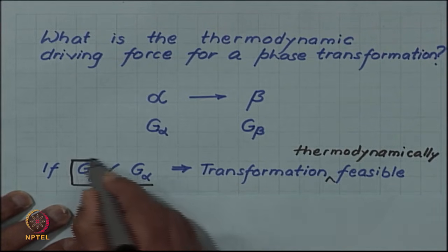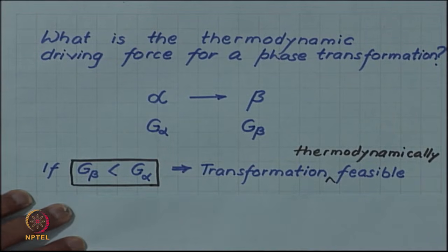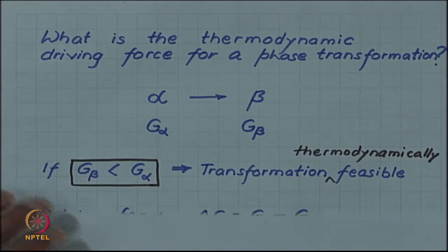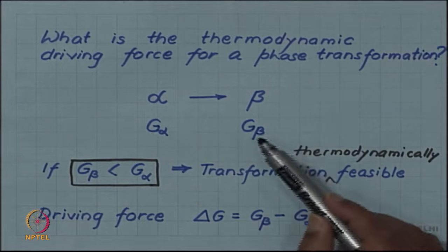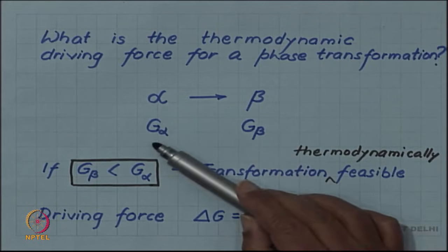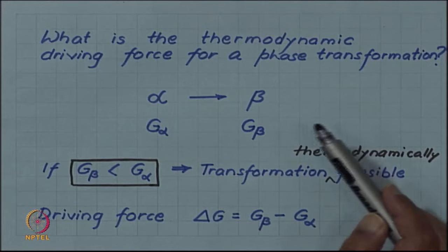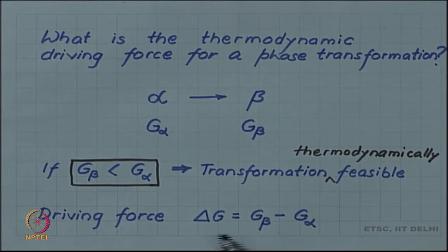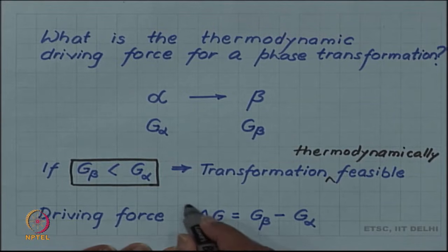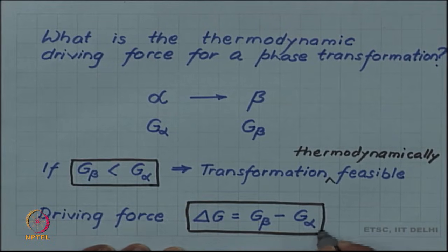This is an important condition for phase transformation to occur at constant temperature and pressure. Since beta has to have lower free energy than alpha for transformation to happen, the lower G-beta is in comparison to G-alpha, the higher is the driving force. The driving force is the difference between the free energy of the two phases.